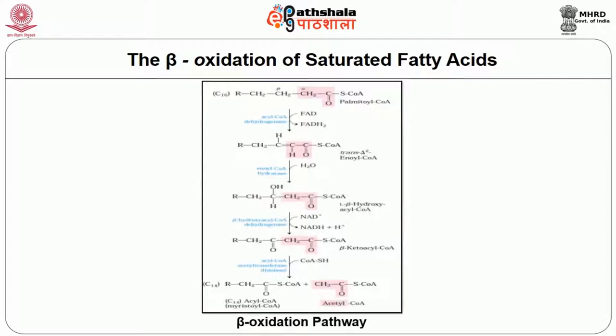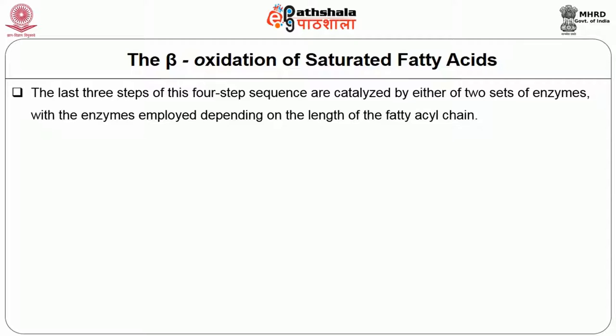In the beta oxidation pathway, in each pass through this four-step sequence, one acetyl residue is removed in the form of acetyl-CoA from the carboxyl end of the fatty acid chain — in this example C16, which enters as palmitoyl-CoA. The last three steps of this four-step sequence are catalyzed by either of two sets of enzymes, with the enzymes employed depending on the length of the fatty acid chain.